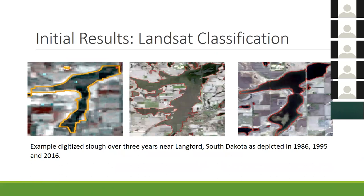Some initial results from the Landsat classification: I digitized a shallow slough near Langford, South Dakota, over three years — 1986, 1995, and 2016 — all presented at the same scale. Visually, you can make a reasonable assertion that there is some expansion and then reduction across those three years.